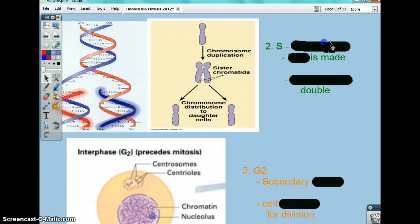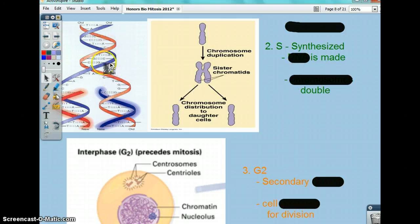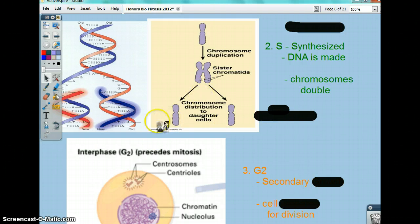Then you have the synthesis phase, which is the making of DNA. As you see, here's one chromosome, and then there's the pair, and they split. And they also double in order to accommodate for the second cell being produced.